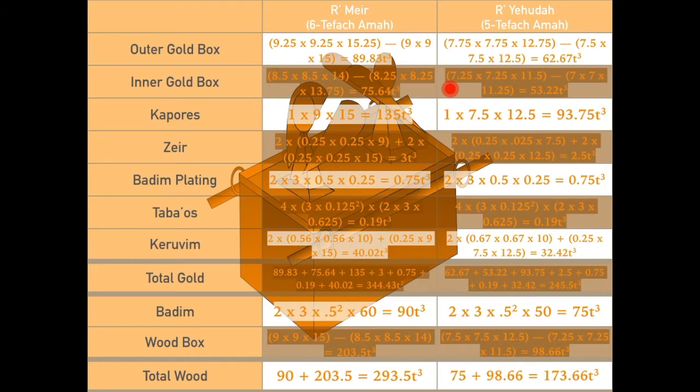Also notice that it's thicker than either gold box. According to Rabbi Meir, the wood box is a tefach thick, while the gold boxes were each a quarter tefach thick, and according to Rabbi Yehuda, the wood box is still a tefach thick, while the gold boxes are half a tefach thick each.